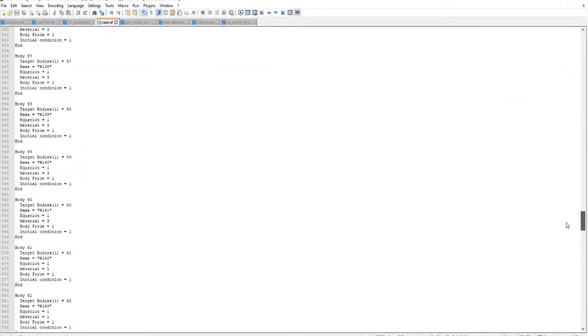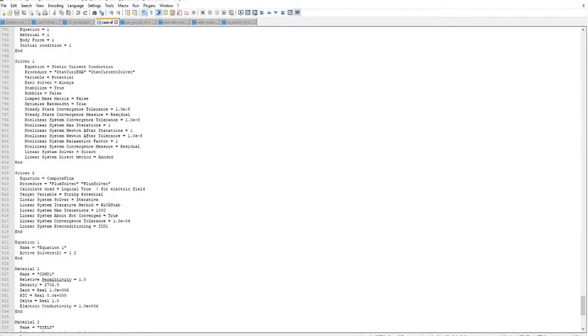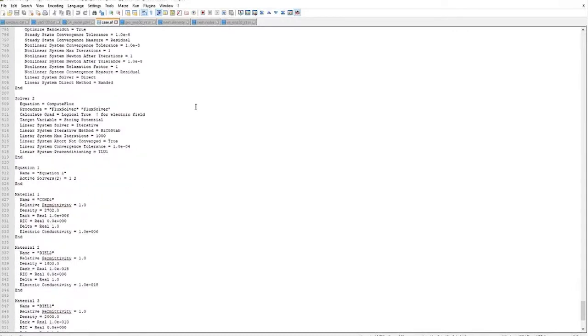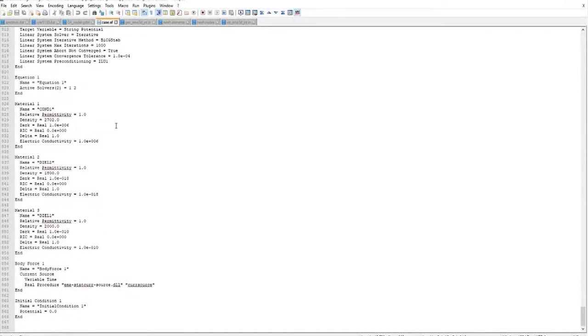So, here you can control some of your solver parameters. Yeah, so solver one, solver two for the voltage, for the electric field. So, expert users will want to play with this section a bit. And then lower here, you have your material definitions. You can go in and change anything after you export it. So, if you want to change the conductivity or if you want to change your RIC values, this is where you do it.